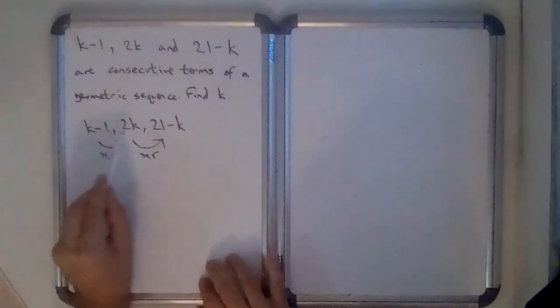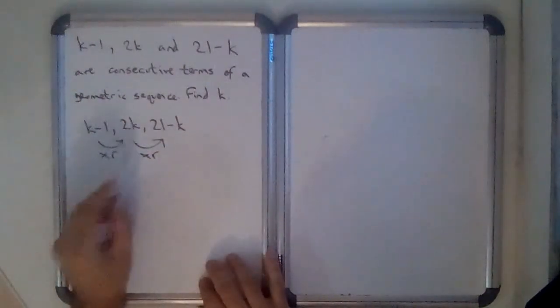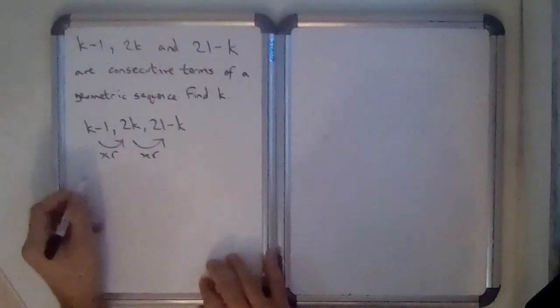So if I can times this by r to get that, then I can divide this by this to get r. So that tells me that if I consider these as a1, a2 and a3...